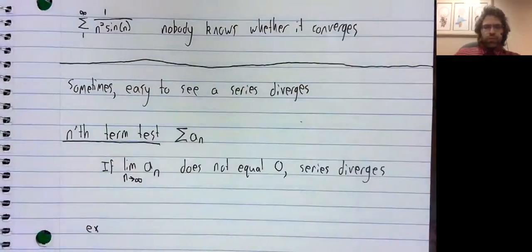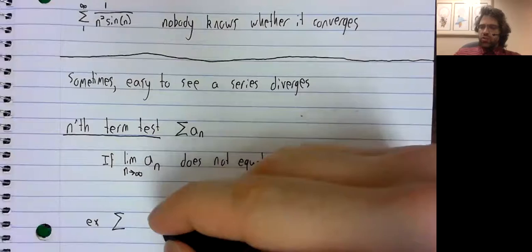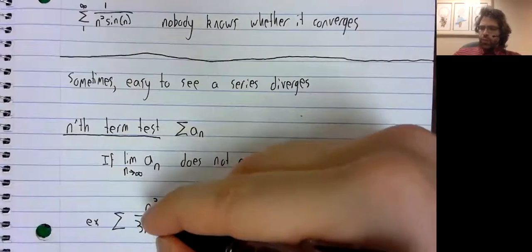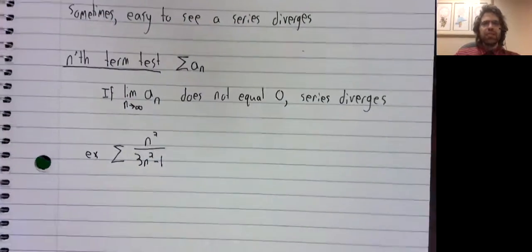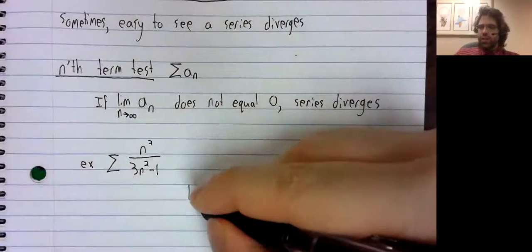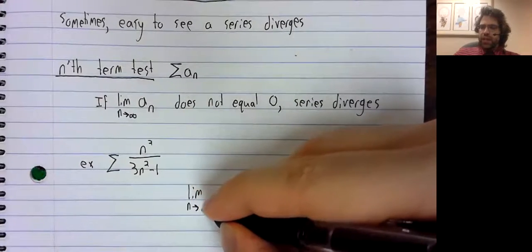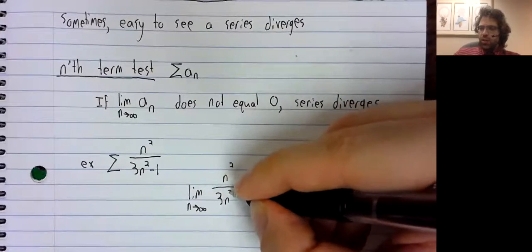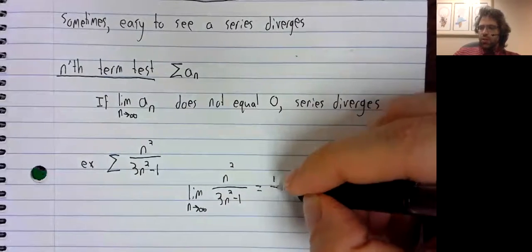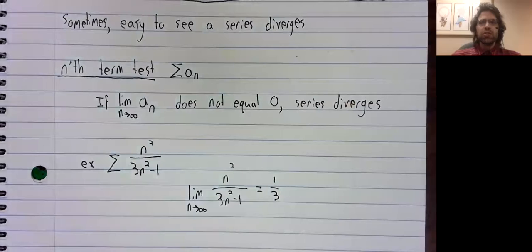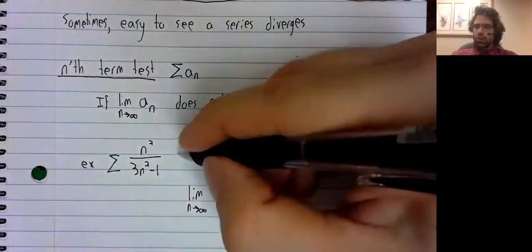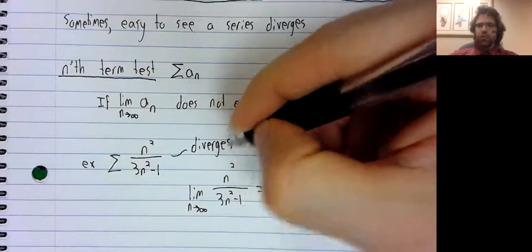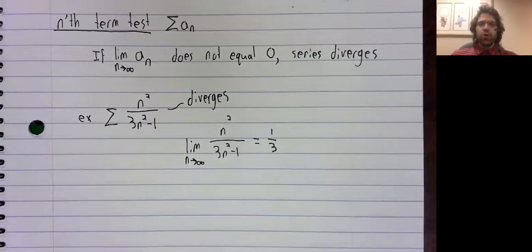For example, the sum of n squared over 3n squared minus one. The limit as n goes to infinity of these terms is not zero—it's one third. Ergo, this series definitely diverges.